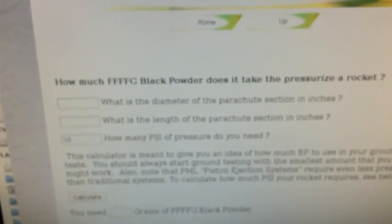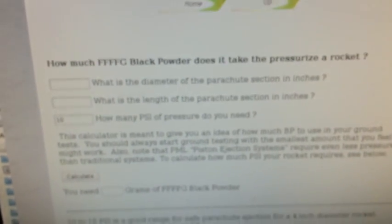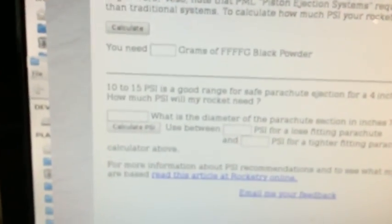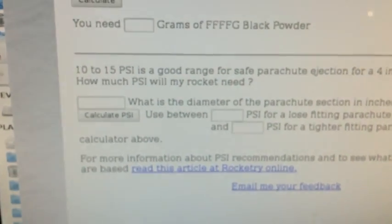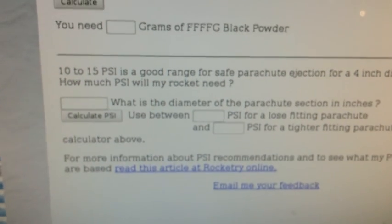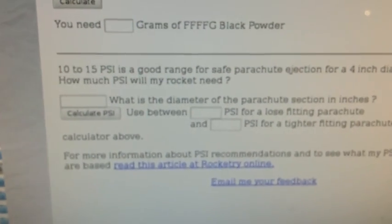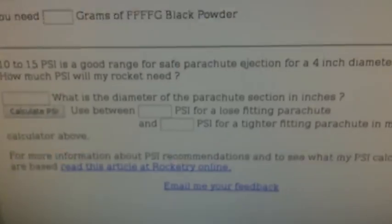You tell the length of the parachute section in inches and how much PSI you need, and if you scroll down a little bit you can find out how to calculate how much PSI you need for the specific diameter rocket you have. In my case it's four inches which ranges between 10 to 15 PSI.